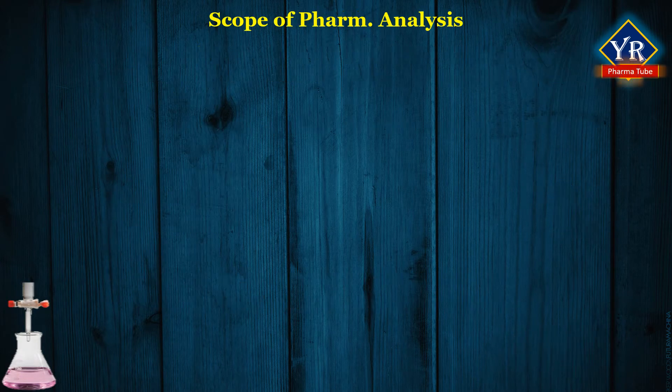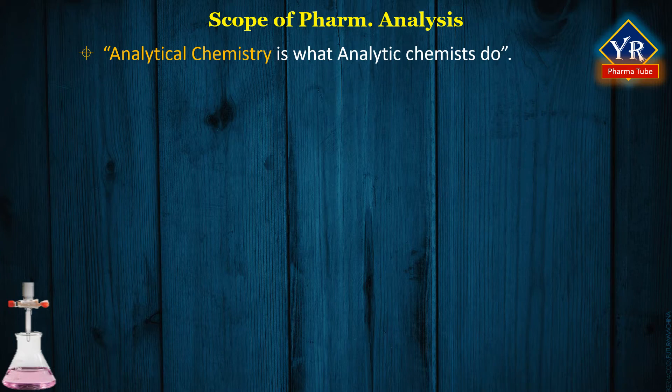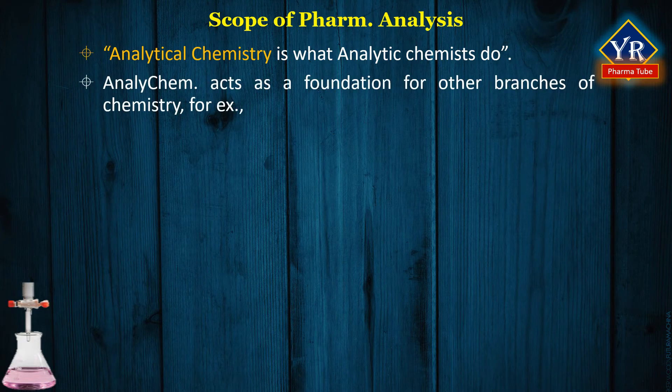Scope of pharmaceutical analysis. Analytical chemistry is what analytical chemists do. Chemicals make up everything we use or consume, and knowledge of the chemical composition of many substances is important in our daily lives. In many respects, analytical chemistry acts as a foundation for other branches of chemistry — for example, agricultural, clinical, environmental, forensic, manufacturing, metallurgical, and pharmaceutical industries.